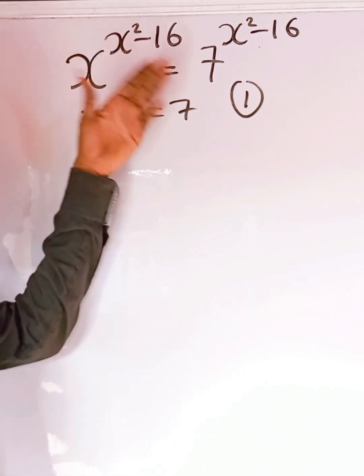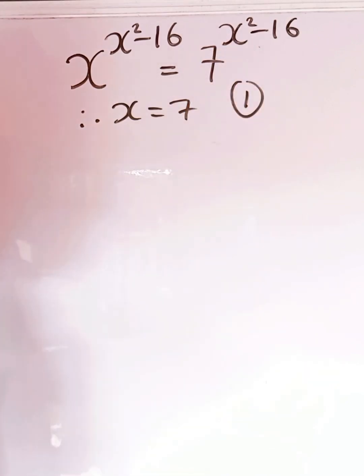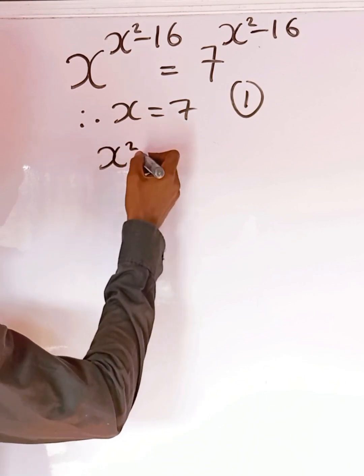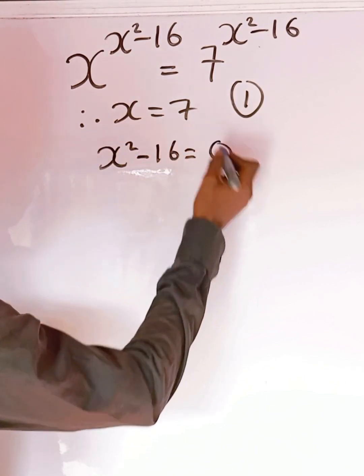So that means x to the power of 0 will give us the same result as 7 to the power of 0. That means we can equate this power to 0. That is x squared minus 16 equals 0.